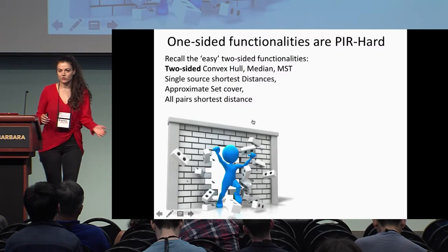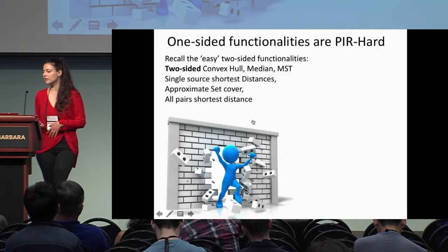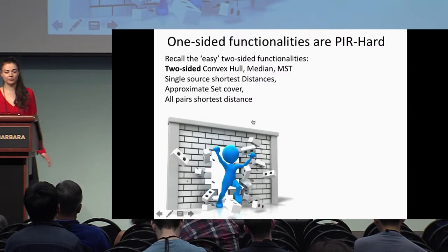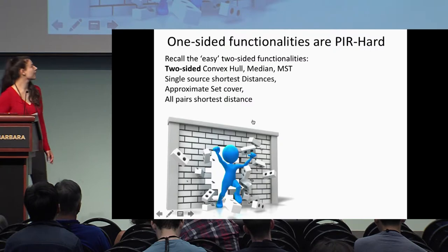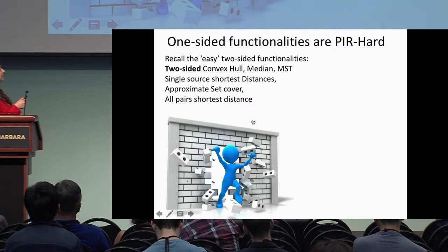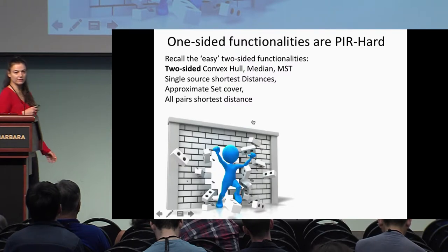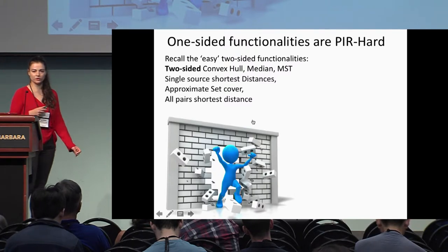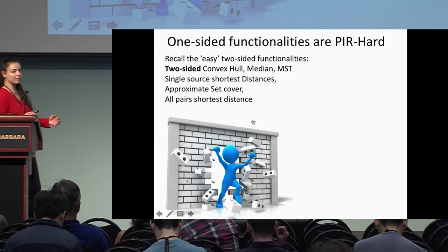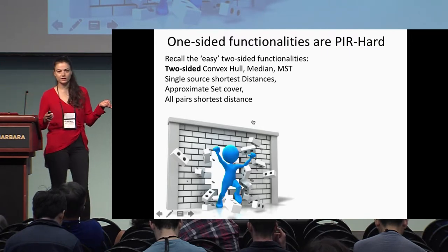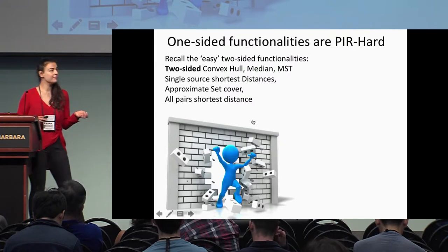So are we happy now? We proved that one-sided functionalities are PIR-hard, and we have all these two-sided functionalities that previous works by Mutu and others showed are easy, with sublinear communication and computation. Is it a generic phenomenon that two-sided functionalities are always easy?